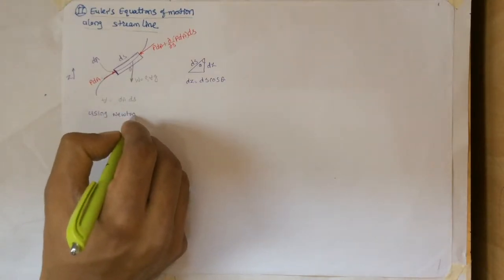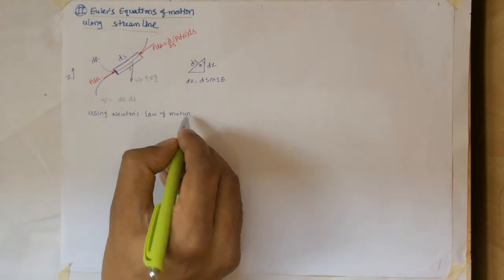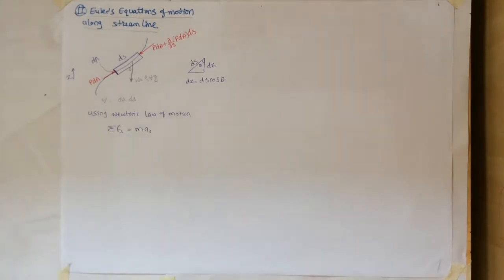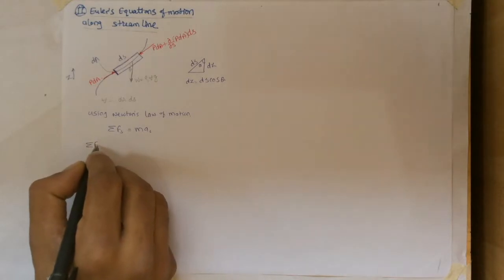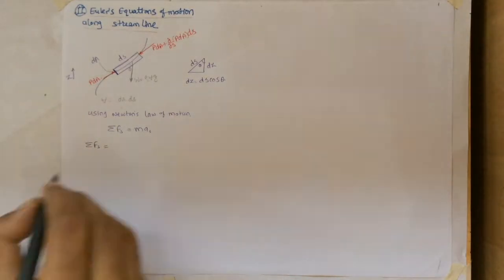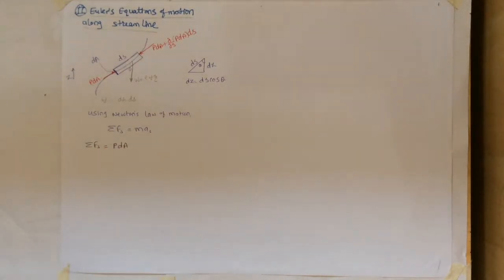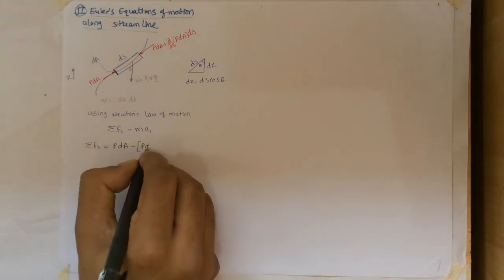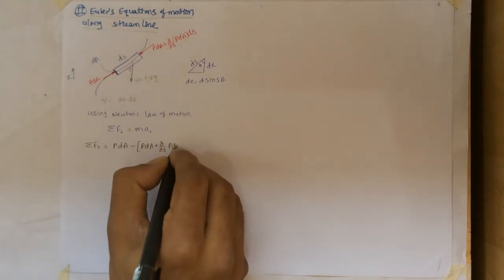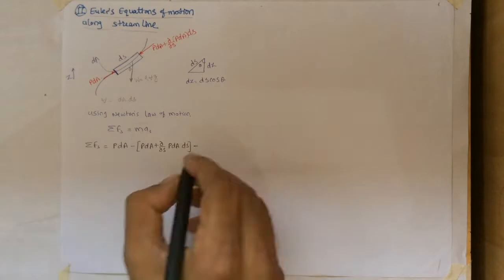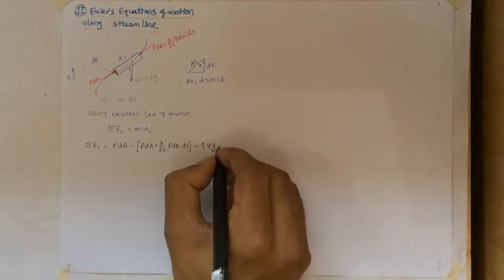Using Newton's law of motion, we can write summation of f equals to ma in streamline coordinate. The left hand side we can solve for as summation fs equals to pdA minus in bracket pdA plus d/ds pdA times ds bracket close minus rho volume g times cos theta.